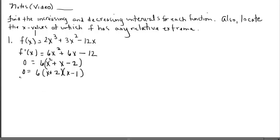We're going to set each factor equal to zero. Six can't equal zero, but this factor results in us getting x equals negative two. And this factor equals zero, resulting in x equals one. So both these x values, when plugged into the derivative, give you a zero slope. There's potentially a min or a max at each of these x values. And if there's a min or a max, then we know the function is changing direction. All we've done is identified the x values that belong on our f prime number line.